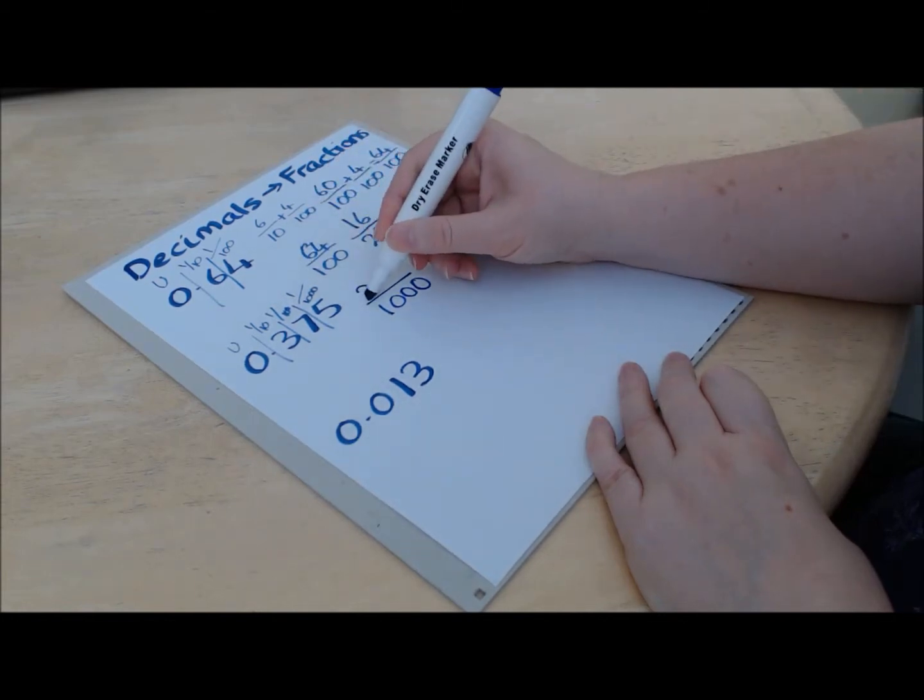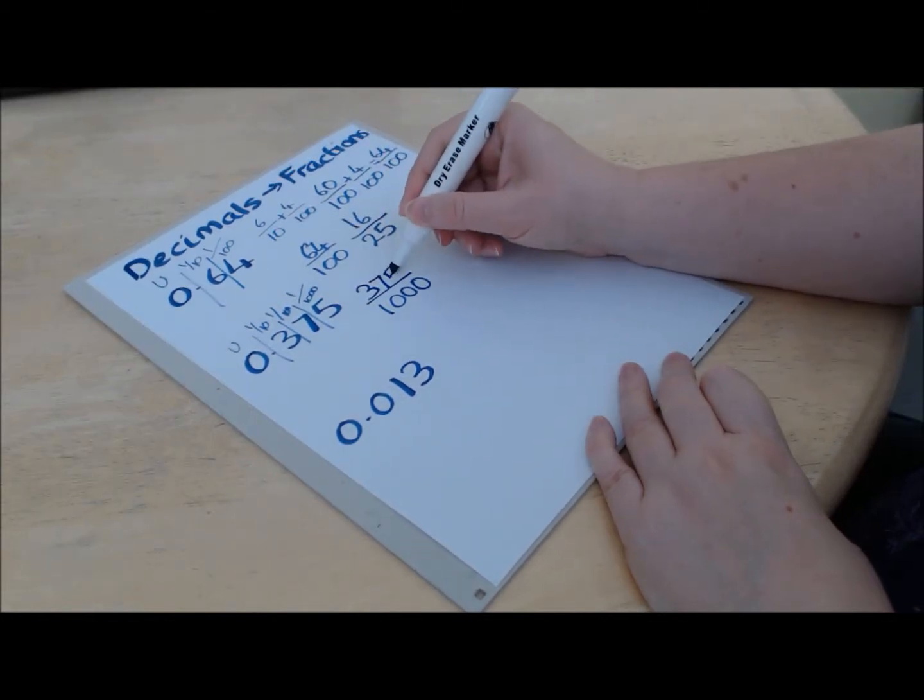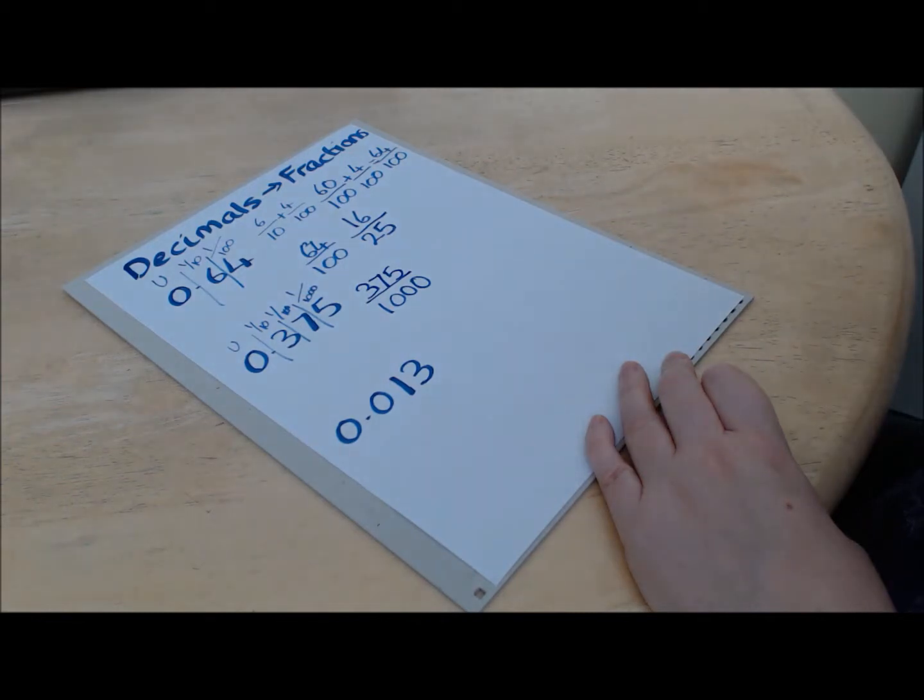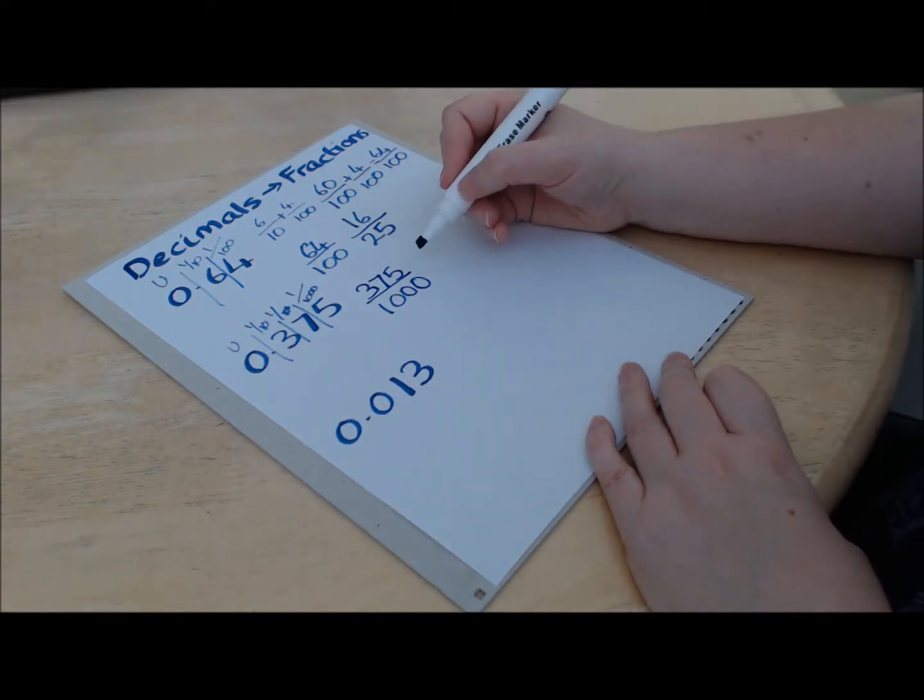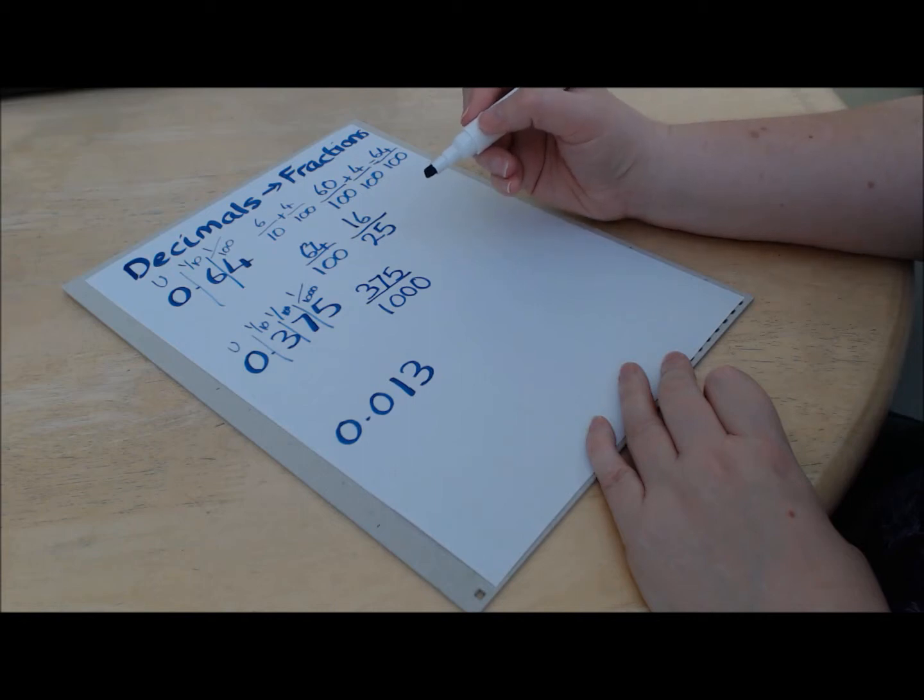So the bottom of our fraction is going to be a thousand and the top is going to be three hundred and seventy-five. So again, it's down to simplifying here. Now, it's quite useful if you can cope with dividing by twenty-five because otherwise it's going to take a lot of steps here.